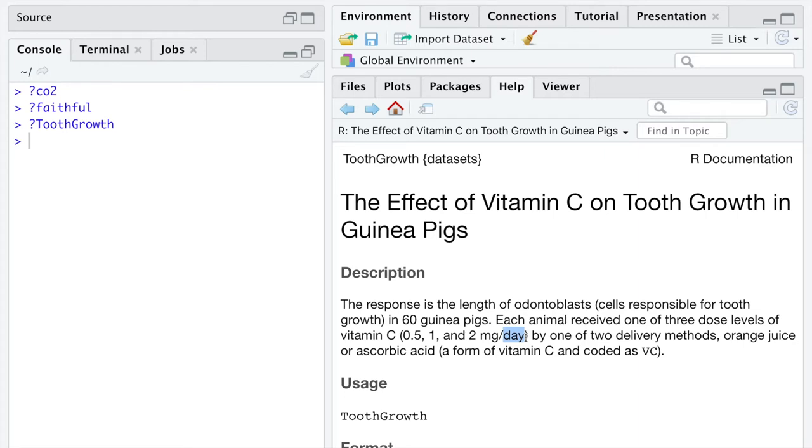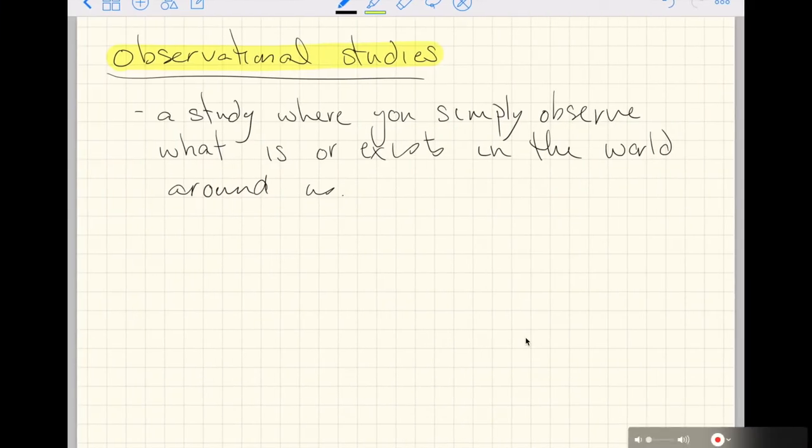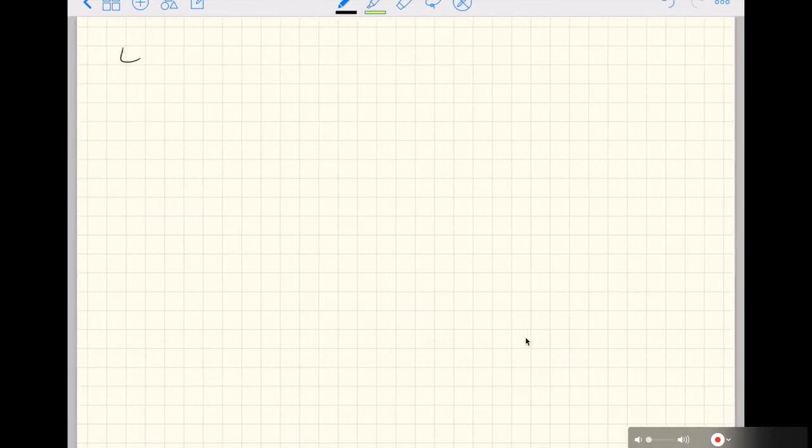So the first two examples I gave us are observational because you just went out into the world and observed what is. This third example I'm giving you is an experiment. Because you have chosen the guinea pigs, how many guinea pigs, what they will receive, how much of it they will receive and how often they will receive it.